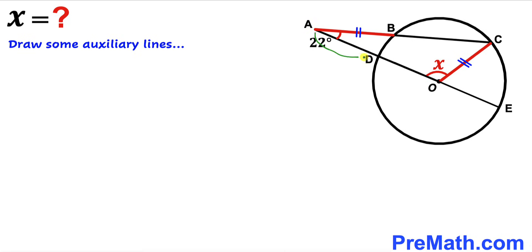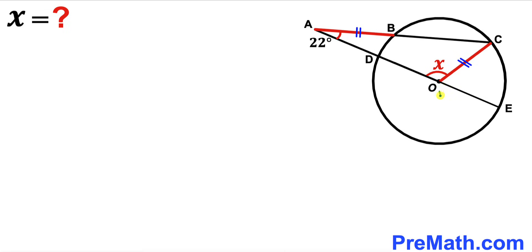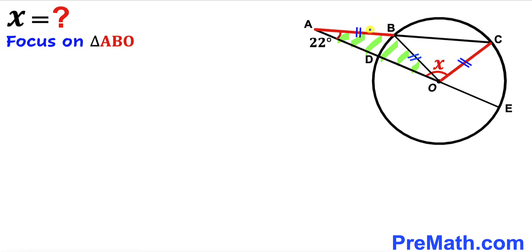I have extended line AO all the way to E, such that points E, O, D, and A are collinear. In the next step, I am going to connect center O with point B. Since OB length equals radius OC length, both are congruent. We now focus on triangle ABO, which is an isosceles triangle since these two side lengths are congruent.